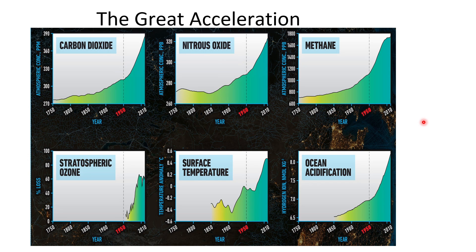Let's look at some environmental indices — things that we can measure. I'm not going to ask you about any of these; you don't have to memorize any of these graphs. But I want you to see that something significant happened in the 1950s. Things started turning badly environmentally speaking — carbon dioxide, nitrous oxide, ocean acidification, temperature. What we call this is the great acceleration. You can see the curve speeding up around this time.